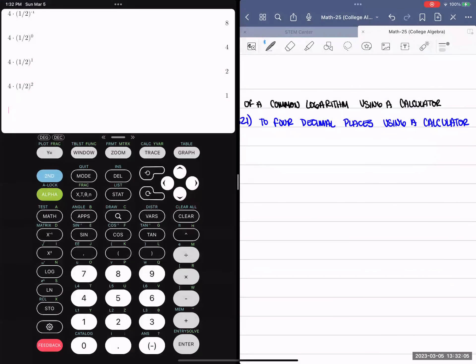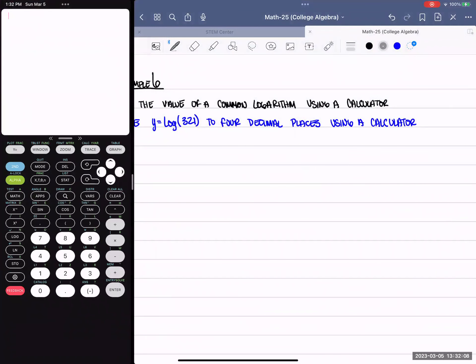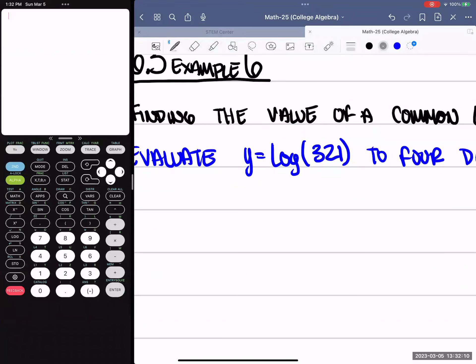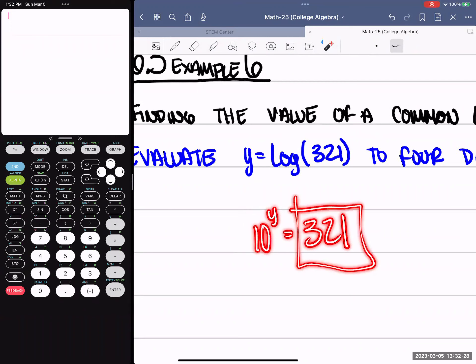Here it's not going to help us to try to turn this into an exponential problem. There's no base here, so it's assumed that it's 10. So 10 raised to the power y equals 321. And there's no way that we could write this as a base of 10 the way it stands right now, so we're forced to just plug it into the calculator.